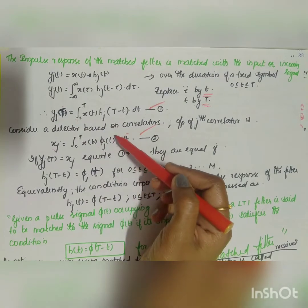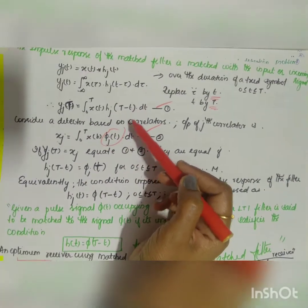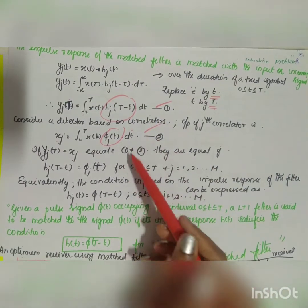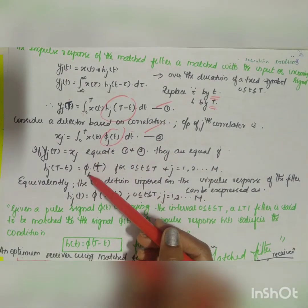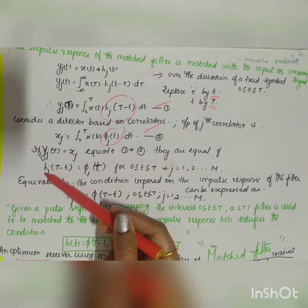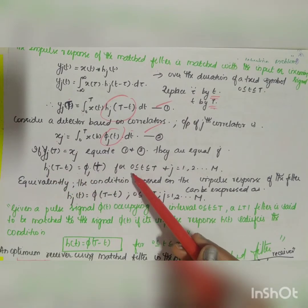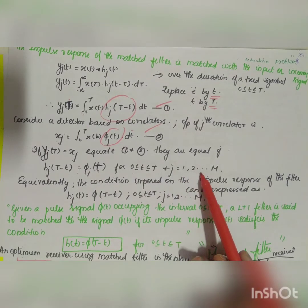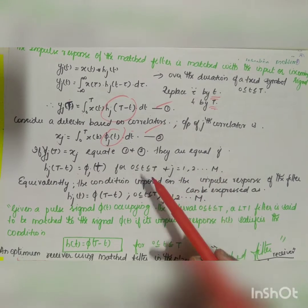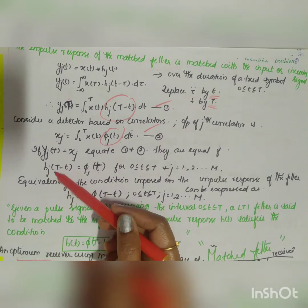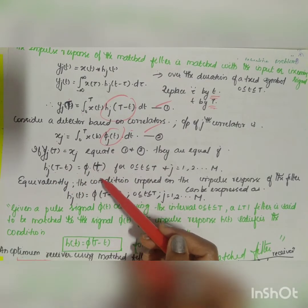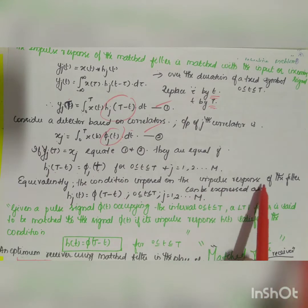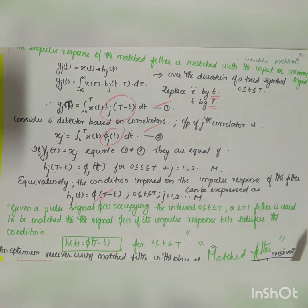Comparing Equation 1 and Equation 2, both are similar where φ_j(t) is replaced by h_j(T − t). Equating the two equations: φ_j(t) = h_j(T − t) for duration 0 to T, where j = 1, 2, ..., M. Alternatively, this can be written as h_j(t) = φ_j(T − t), which gives the condition on the impulse response of the matched filter.